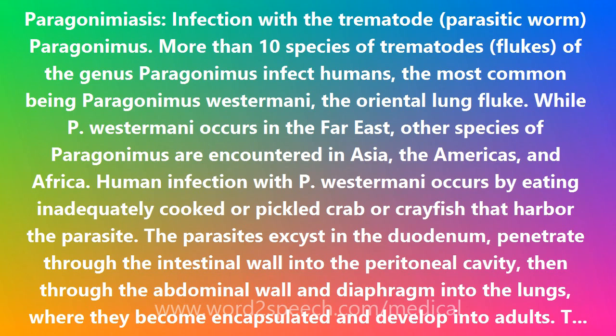The parasites exist in the duodenum, penetrate through the intestinal wall into the peritoneal cavity, then through the abdominal wall and diaphragm into the lungs, where they become encapsulated and develop into adults. The worms can also reach other organs and tissues, such as the brain and striated muscles.